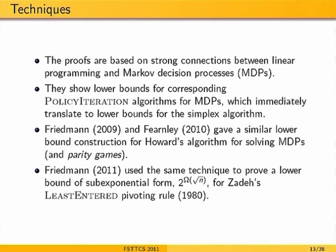The main results of this paper: the random edge rule requires 2^(n^(1/4)) pivoting steps in expectation, and the random facet rule requires a subexponential number of steps. All previous lower bounds for pivoting rules relied on constructions based on deformations of cubes and simple polytopes. By going via Markov decision processes, the polytopes constructed are very complex but still analyzable. There is also a well-known policy iteration algorithm for solving MDPs that turns out to be exactly the simplex algorithm running on a related LP.